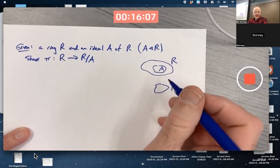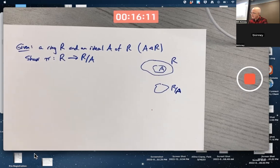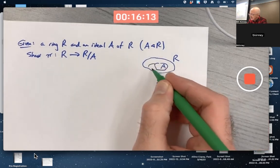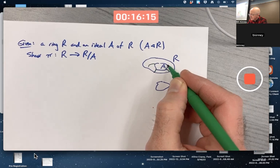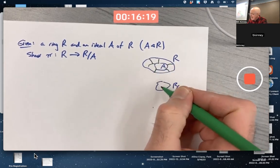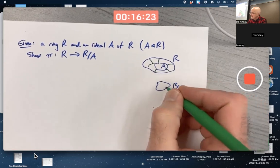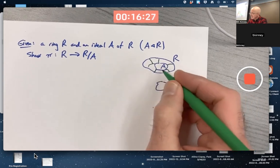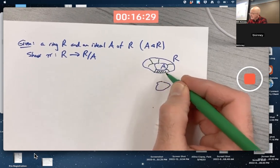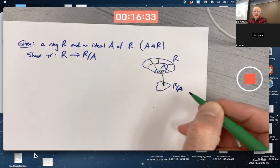And in fact, what ends up happening is that the individual left cosets of A in R, let's imagine drawing those, these are a bunch of different left cosets of A, will get mapped to individual elements of the factoring. And that really is the essence of the first isomorphism theorem. So this entire coset, for example, will get mapped to some individual element down there.